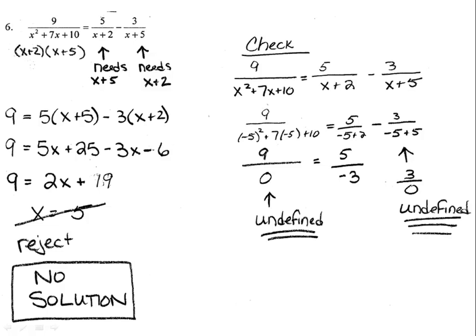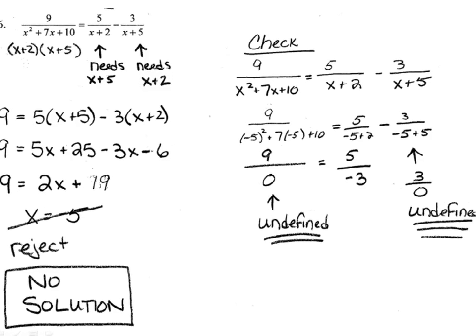When I substitute in the negative 5, I end up with some fractions that have a 0 in the denominator. 9 over 0 is undefined, and therefore, the solution does not provide a valid answer to this equation. I reject the solution that I came up with, and there's no solution to this equation.